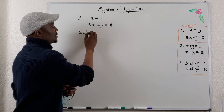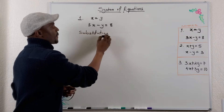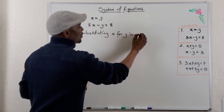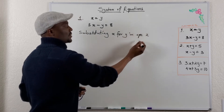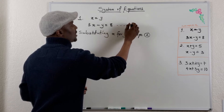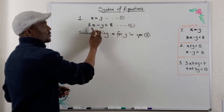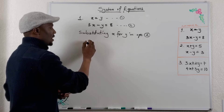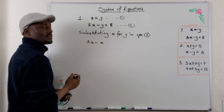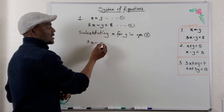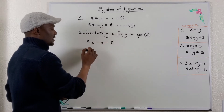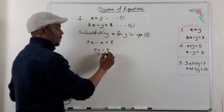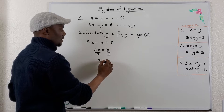Substituting x for y in equation 2. This is my abbreviation for equation. In equation 2, instead of writing y, I'm going to write x because x is the same thing as y from the first equation. So I'm going to have 3x minus x. I've replaced the y with x because x is equal to y, equals 8. So I have 3x minus x will be 2x equals 8. And I can divide both sides by 2, which gives me x is equal to 4.